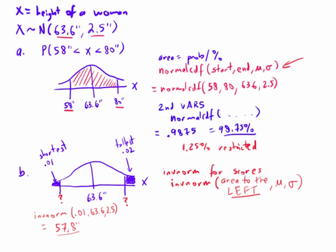Well, we want to do the same thing on the other end. So if I want to find the score up here that separates the tallest 2% from the rest, I'm going to go inverse norm.